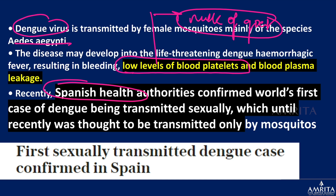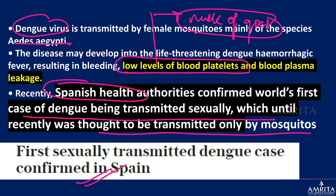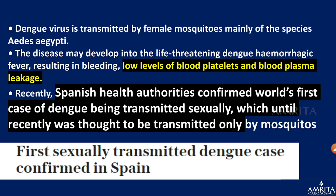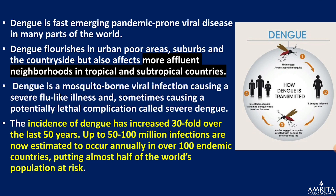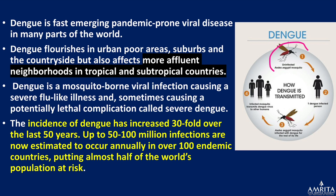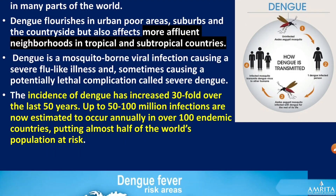Recently, Spanish health authorities confirmed the first case of dengue being transmitted sexually — until then it was only transmitted by mosquitoes. So along with being a vector-borne disease, dengue has also become a sexually transmitted disease in one confirmed case. Dengue is prevalent in tropical and subtropical countries, not only in slums but also in affluent areas.